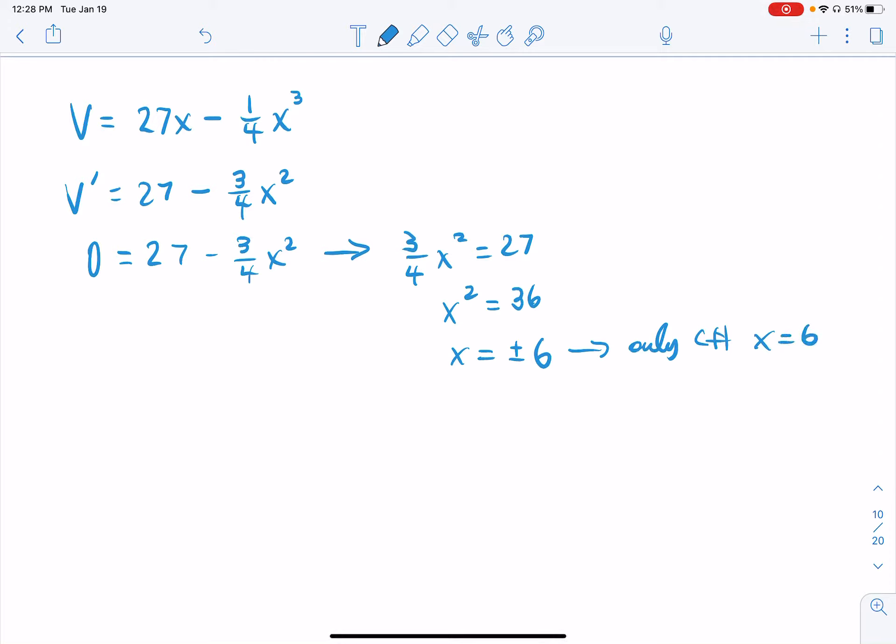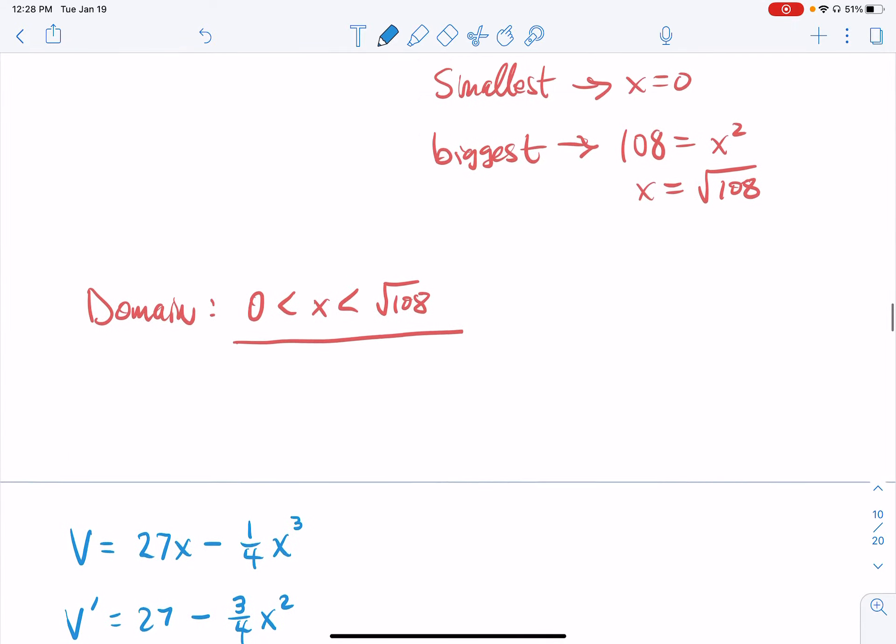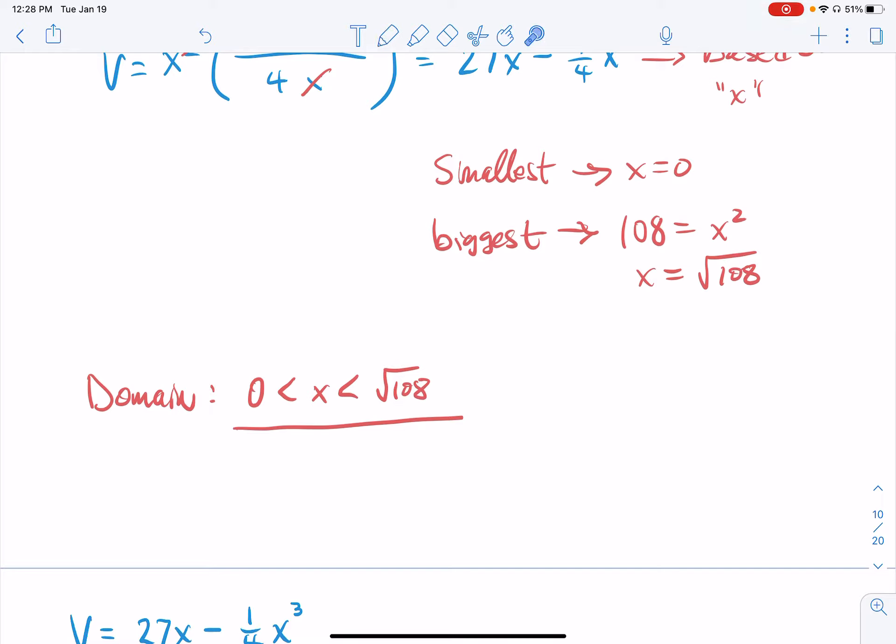Just because I got a critical number, there's no guarantee that that is the absolute minimum or the absolute maximum. You still have to do some more calculus. I can't use the closed interval test for obvious reasons. Even though I have some equations, x can't be equal to 0 because then you have no box. And x can't be equal to the square root of 108 because you don't have a box. It's got to be sandwiched in between there.